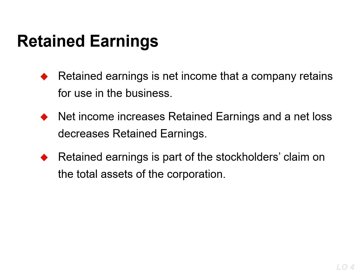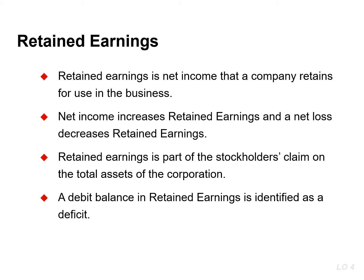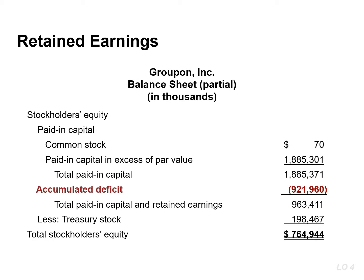The balance in retained earnings is part of the stockholder's claim on the total assets of the corporation. A debit balance in retained earnings is identified as a deficit. If retained earnings has a debit balance instead of a credit balance, the company has not retained earnings, but rather accumulated a deficit. A company reports a deficit as a deduction in the stockholder's equity section of the balance sheet.